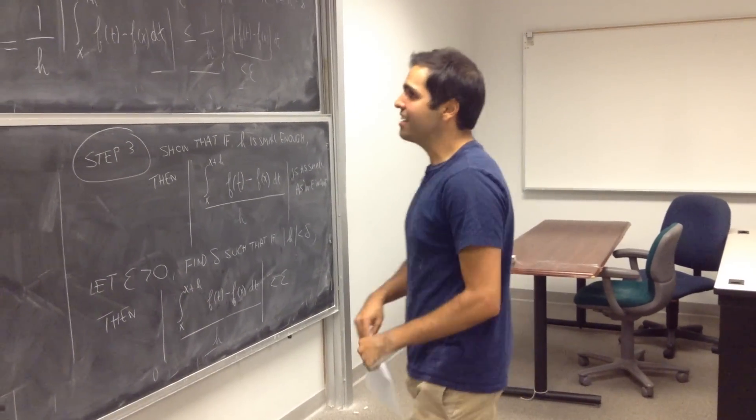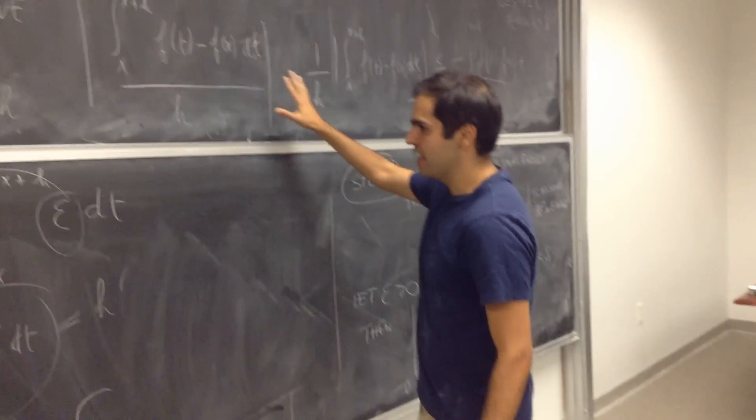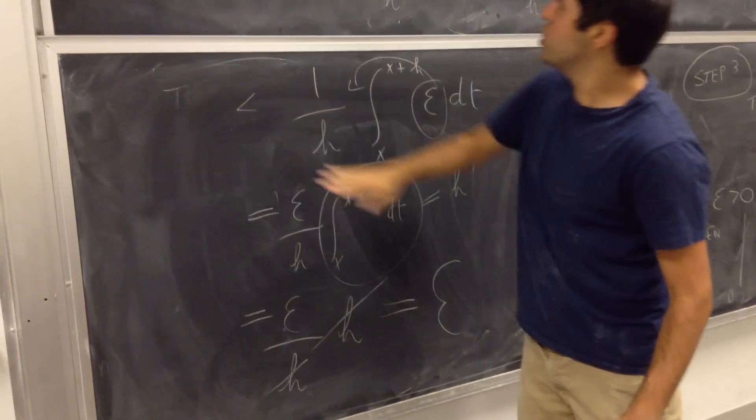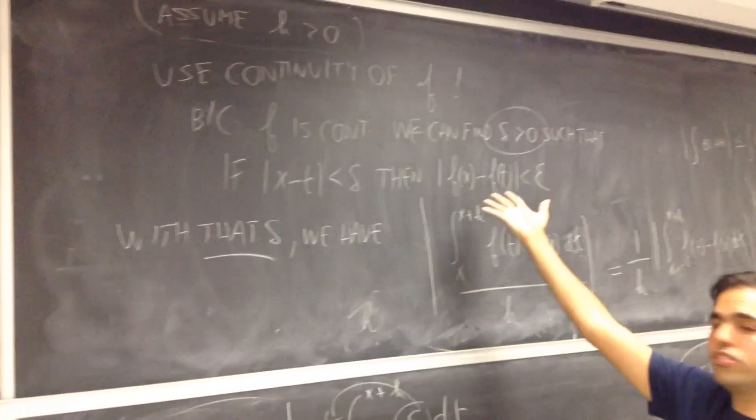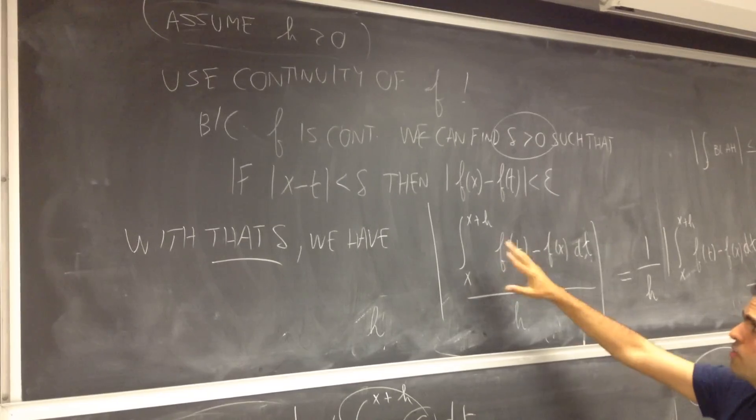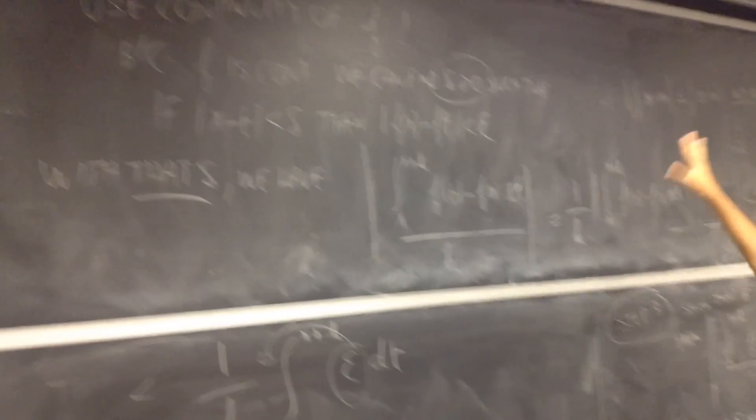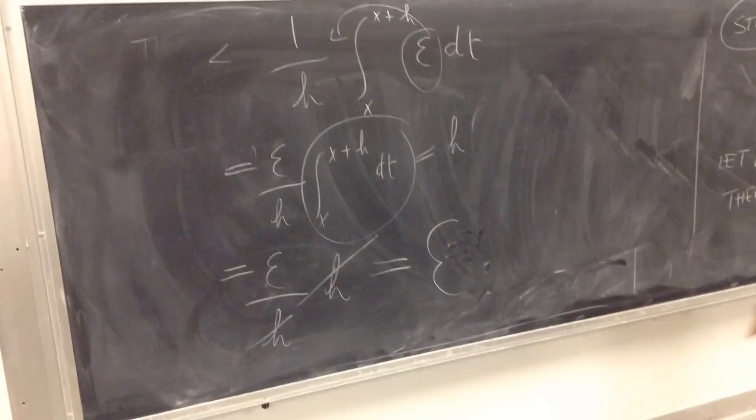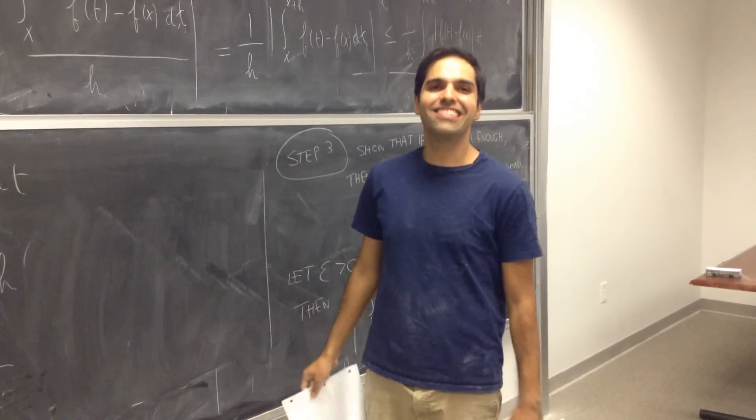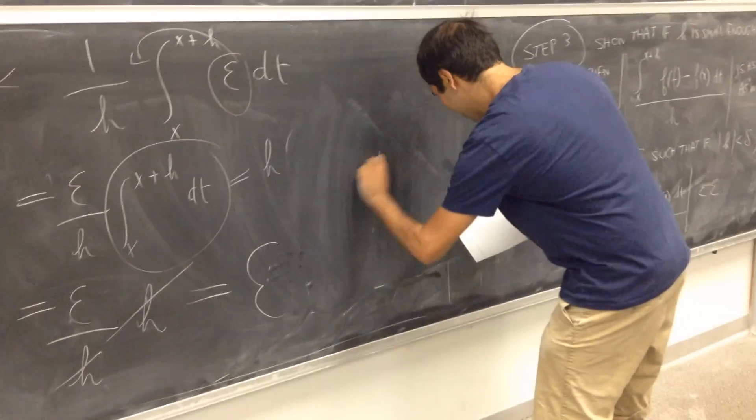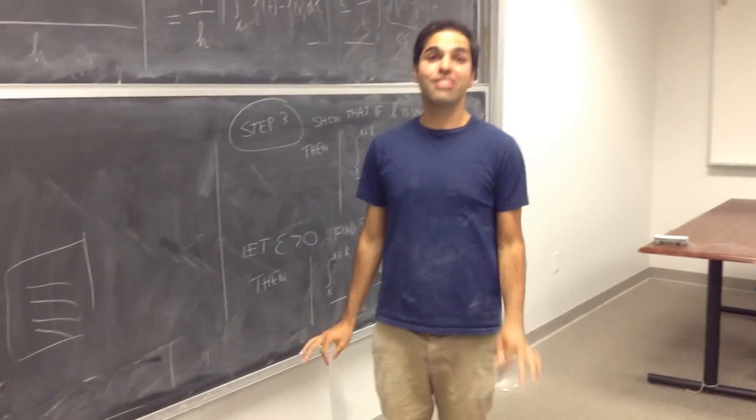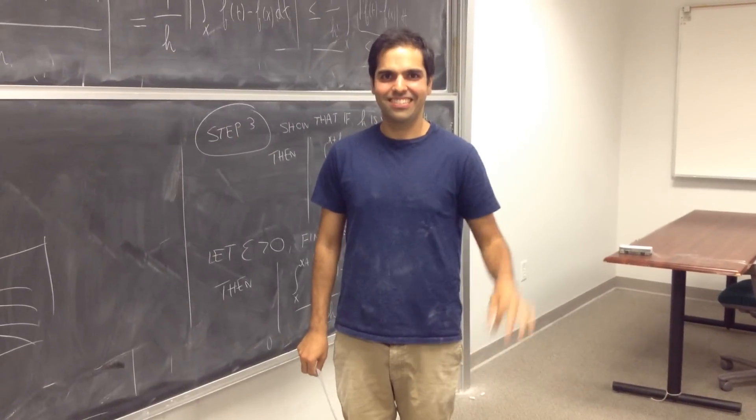So in fact, with that delta, we have that if we choose that same delta that gives you the continuity of f, then if h is smaller than delta, we have that this junk is strictly less than epsilon. And then once you find epsilon in the end, mathematicians are very happy and we are done. And we proved the fundamental theorem of calculus. Wow.